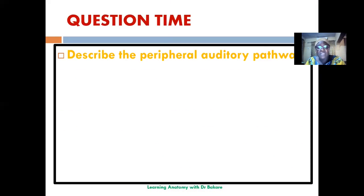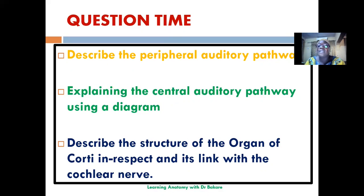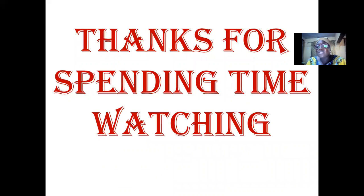For review, three questions: First, describe the peripheral auditory pathway and how it modifies sound waves from the external environment. Second, explain the central auditory pathway. Third, describe the structure and morphology of the organ of Corti and link it with the cochlear nerve. Thanks for watching — let's continue to learn through this channel.